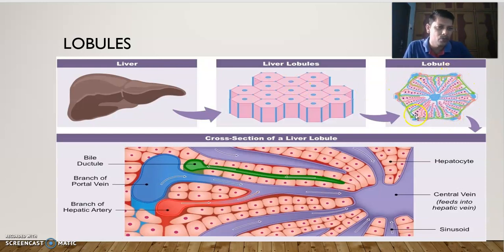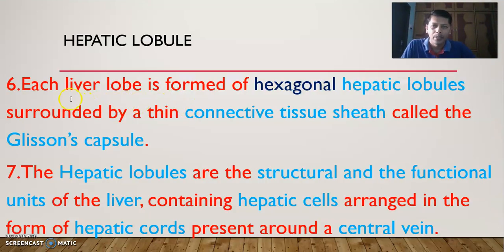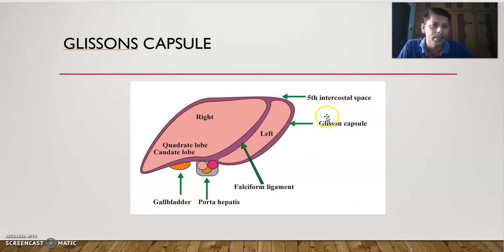This hexagonal hepatic lobule has six sides — 1, 2, 3, 4, 5, 6. Each liver lobe, whether right or left, is formed by these hexagonal hepatic lobules, which are surrounded by a connective tissue sheath called Glisson's capsule. This is very important and was asked in a previous NEET exam.